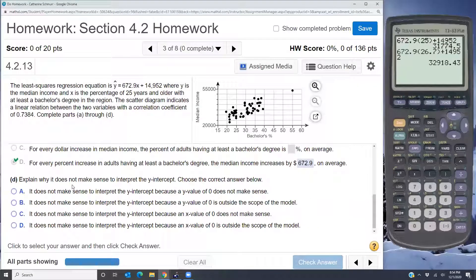And part D says explain why it does not make sense to interpret the y-intercept. Now the y-intercept is always when x is zero. So we would be talking about 0% of the population of 25 years and older having at least a bachelor's degree. Now this is unlikely but it's not impossible. There are certain regions that might not have bachelor's degree college graduates. In more rural areas that might be the case. So it's not impossible, but what we would say is that it's outside of the scope of this data.